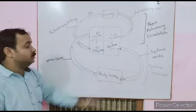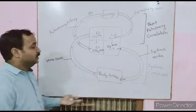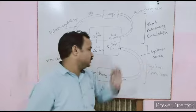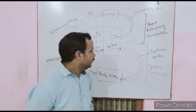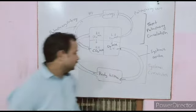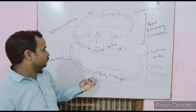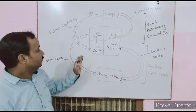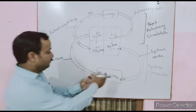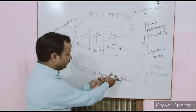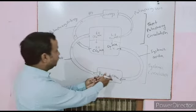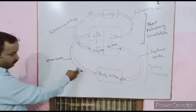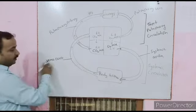The path from the heart to the body tissue and back is a long circulation, and this is called long systemic circulation. First of all, we have to understand systemic circulation. The body tissue collects blood from the body. The vessel involved is the vena cava.